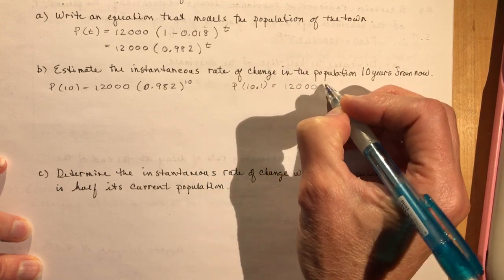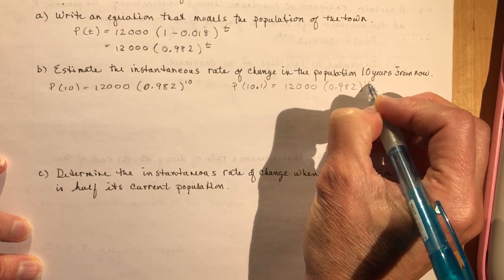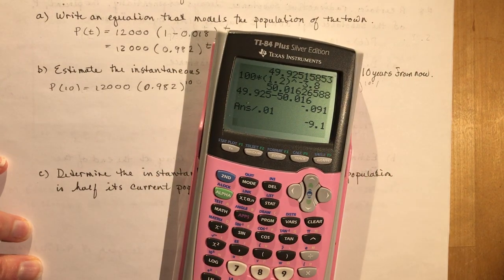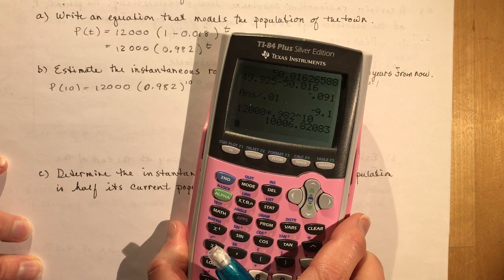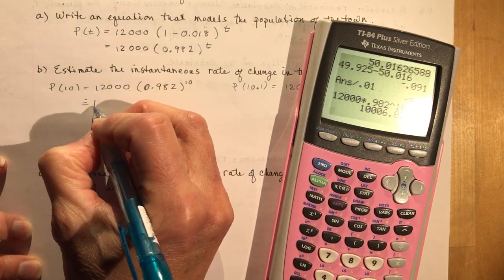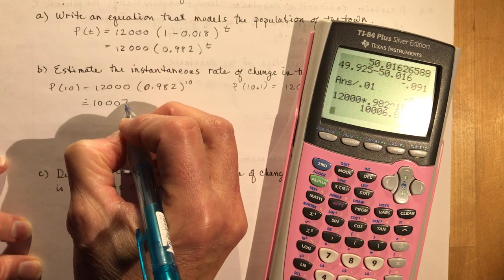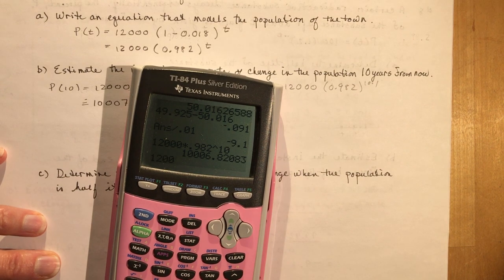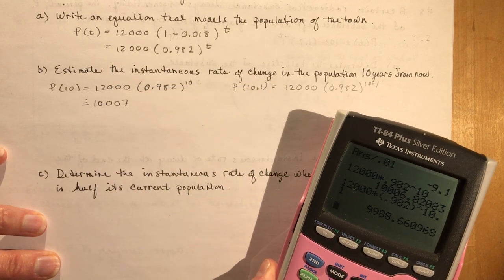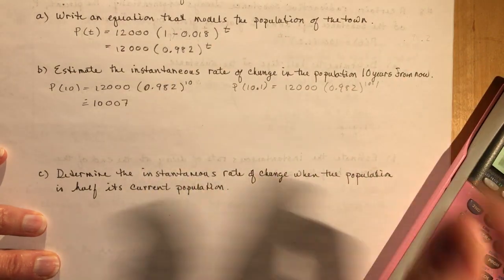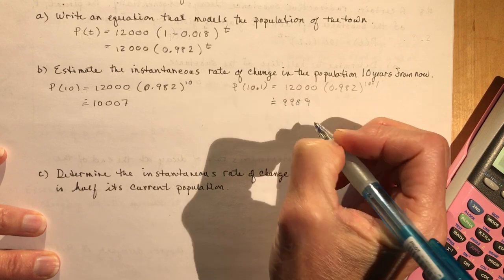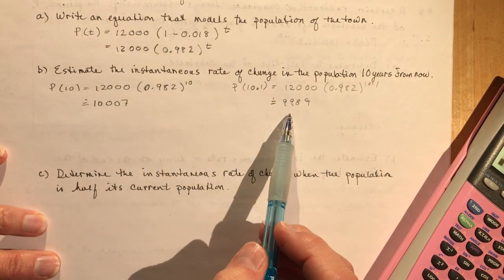So this is going to be 12,000 times 0.982 to the 10.1. I'm going to do those two calculations. 12,000 times 0.982 to the power of 10 gives me approximately 10,007. And 12,000 times 0.982 to the power of 10.1 gives me approximately 9,989. Does that make sense? It says decreasing, so as time increases it should be going down — and it is.